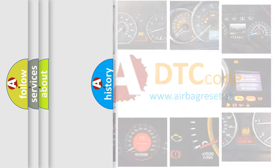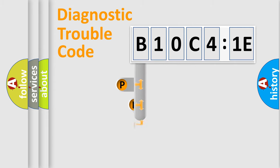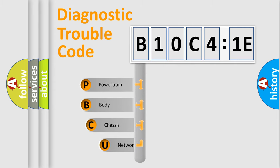We divide the electric system of automobile into the four basic units: Powertrain, body, chassis, network. This distribution is defined in the first character code.